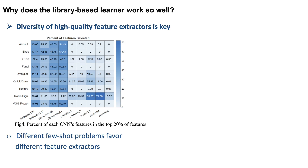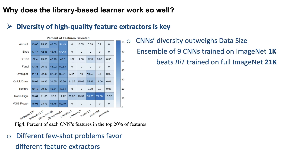Here we have different few-shot problems and the top features they pick. As we can tell, different few-shot problems favor different feature extractors. We also find that CNN diversity outweighs the data side: we compare the ensemble of nine CNNs trained on ImageNet-1K versus the deeper CNN trained on the full ImageNet-21K, and the first one outperforms the latter.